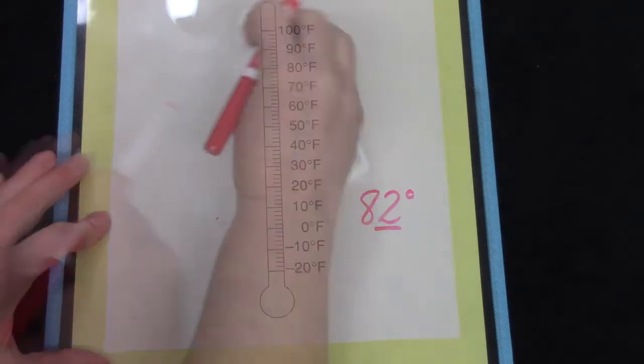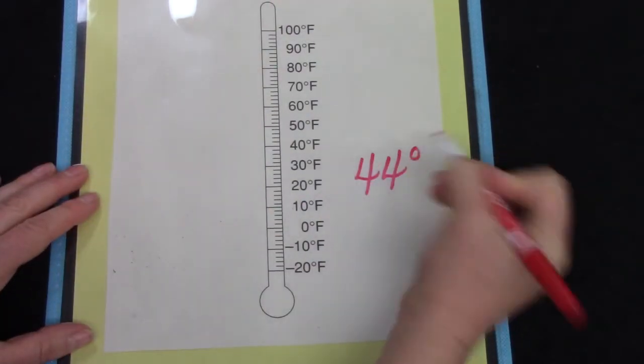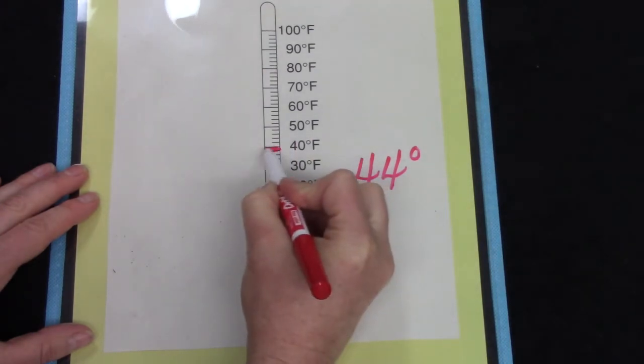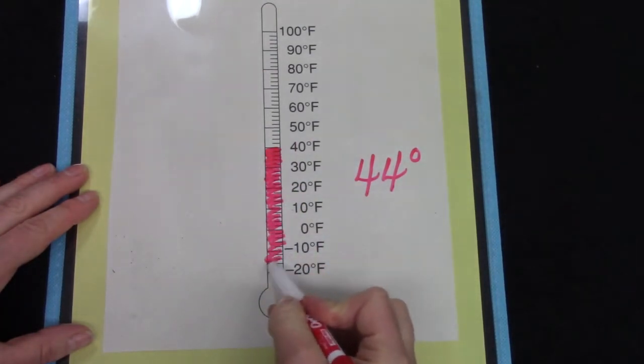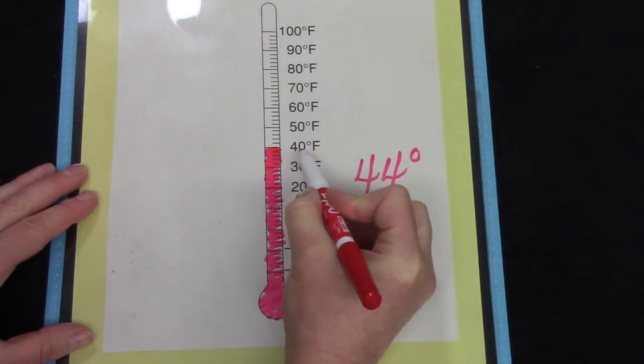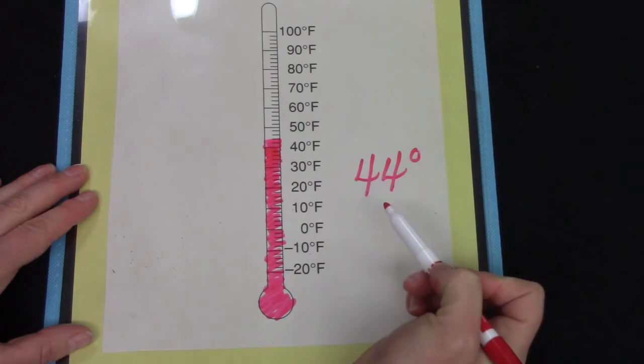Let's try another one. This time we're going to find 44 degrees. Well, it's pretty easy to find 40. So I'm going to fill it all in. Now I need to find 44. So I'm up to 40. 42. 44. This is 44 degrees.